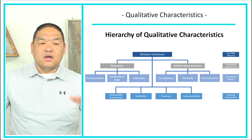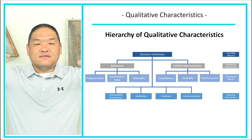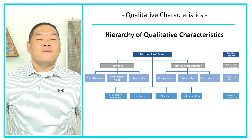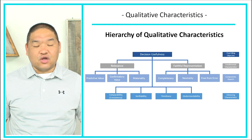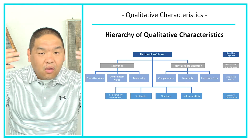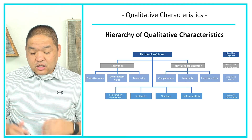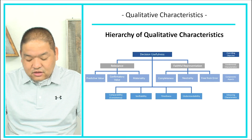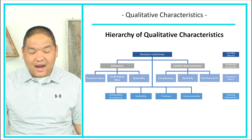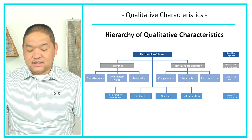Furthermore, we can add something called enhancing characteristics. So we've got these basic fundamental characteristics, but then we have enhancing characteristics — these are characteristics that will enhance the information we provide to external users. They do even more to ensure that information provided to decision makers is useful. We've got four enhancing characteristics. The first is comparability and consistency — making sure we can compare our financial statements with other companies.